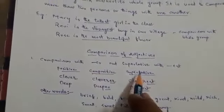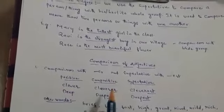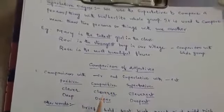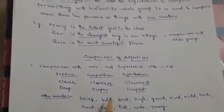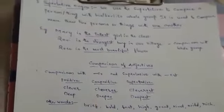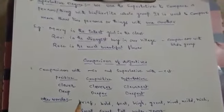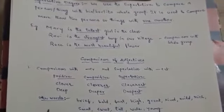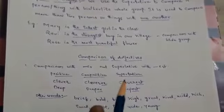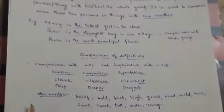So, the forms of adjectives are of different types. Some are regular, some are irregular. So, let us discuss how the adjective changes its forms from positive, comparative and superlative. See the first one, comparison with ER and superlative with EST.